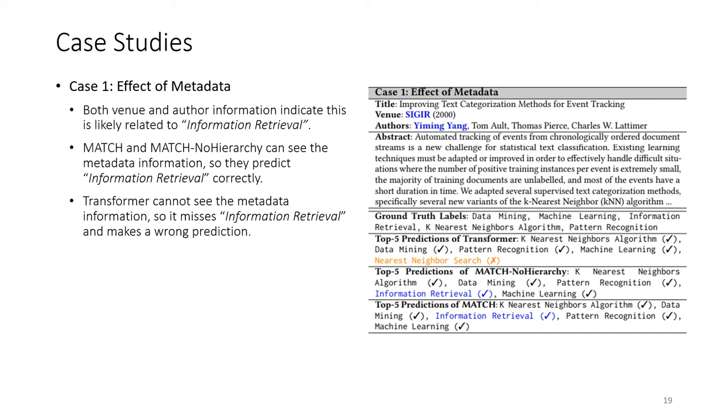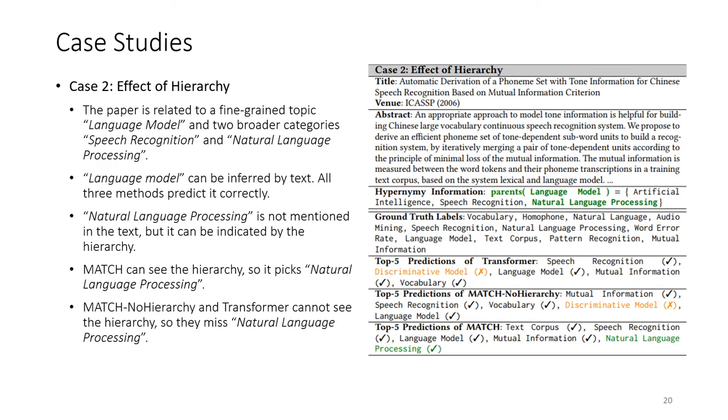To qualitatively show the effect of metadata and hierarchy, we also conduct case studies. Here, for each paper, we show its ground truth labels and top-five predictions of Transformer, MATCH no hierarchy, and MATCH. This paper—we can see both venue and author information indicate it is related to information retrieval. MATCH and MATCH no hierarchy can see the metadata information, so they predict information retrieval correctly. However, Transformer cannot see the metadata information, so it misses information retrieval and makes a wrong prediction.